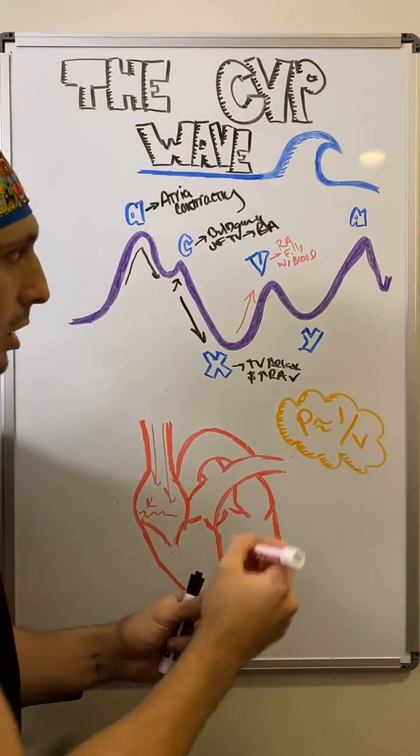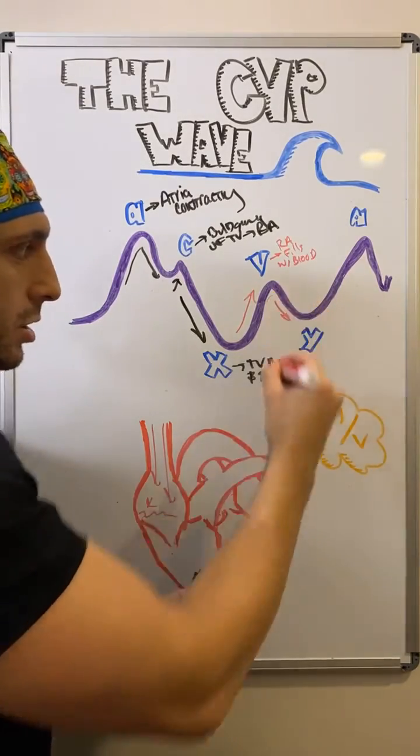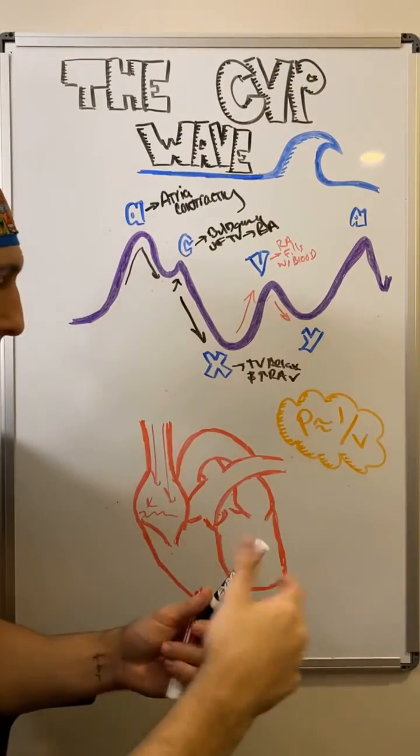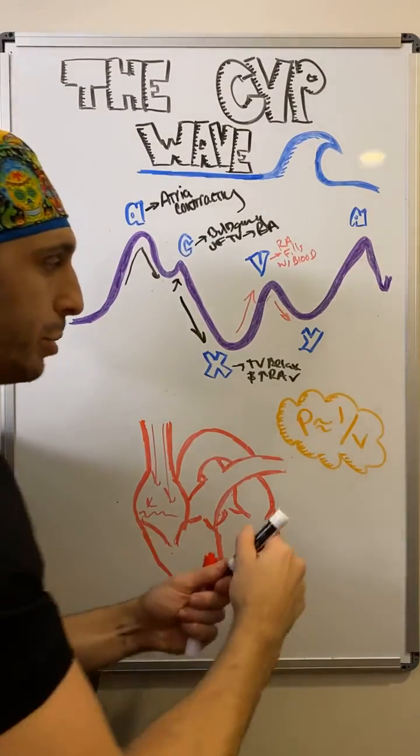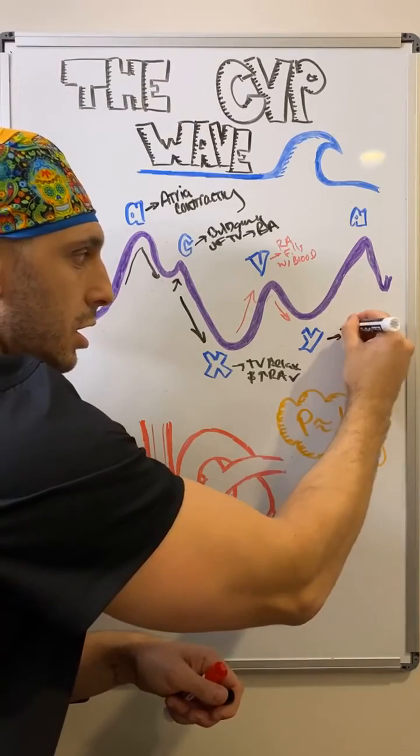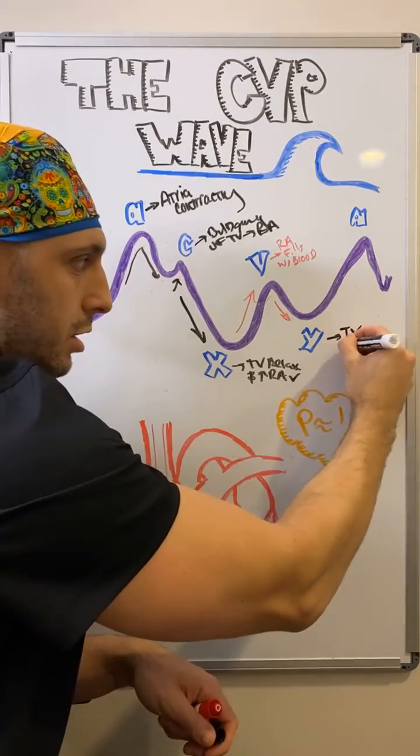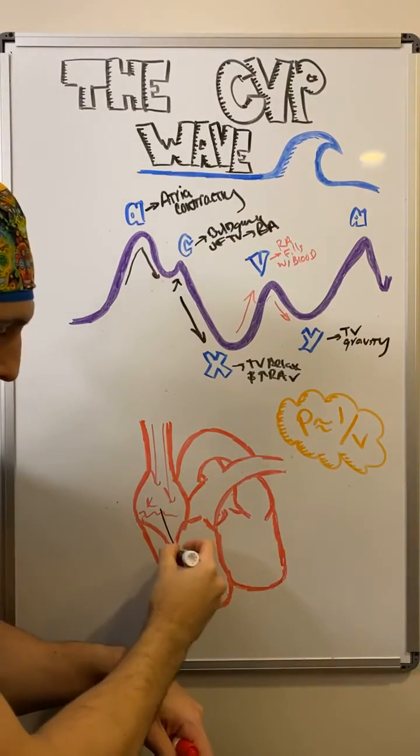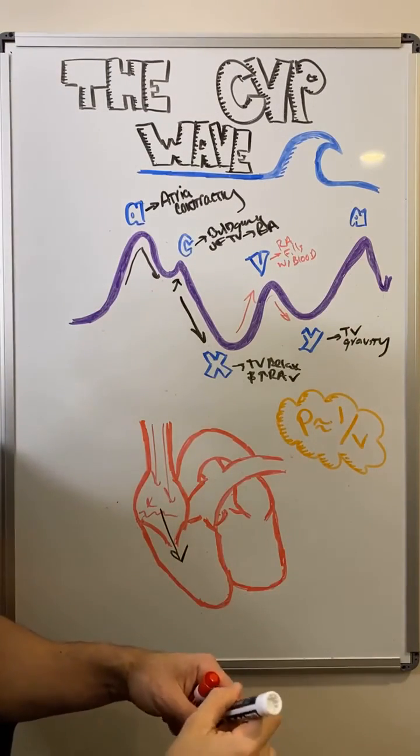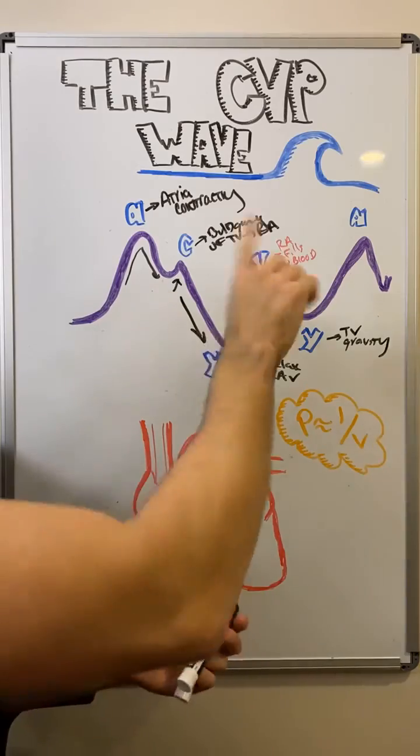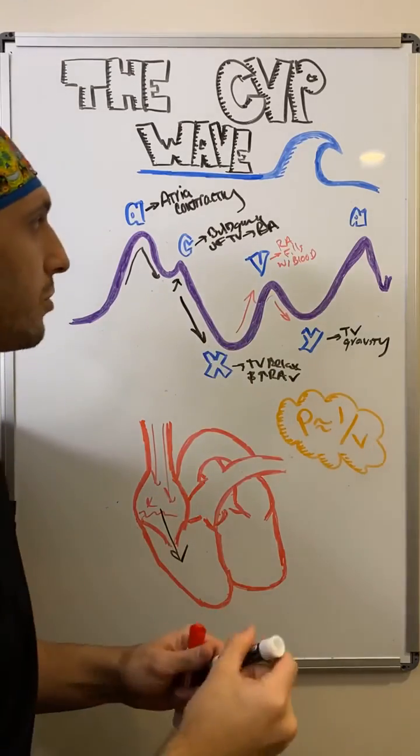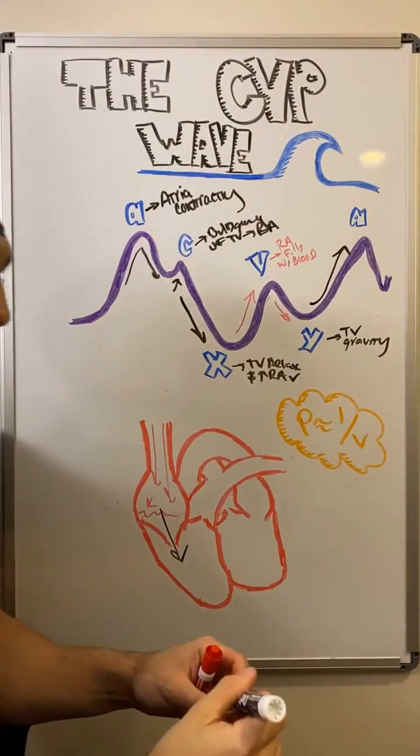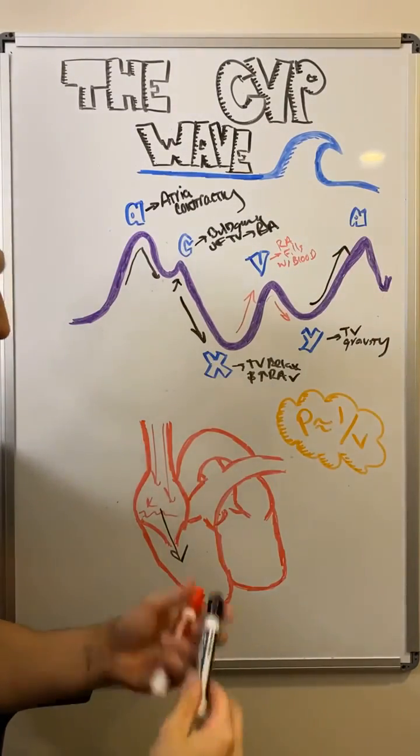And then our Y, which is the last descent, if anybody guessed or knows offhand, why is the pressure going to immediately drop again? Well, the tricuspid valve opens and gravity is going to allow most of this blood to just fall out into the right ventricle. And then after that, we start all over again, just like before. A, the atria contracts and the pressure shoots up once more. And this is pretty much it.